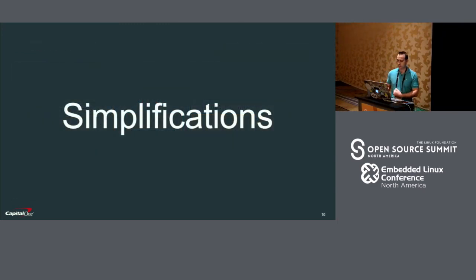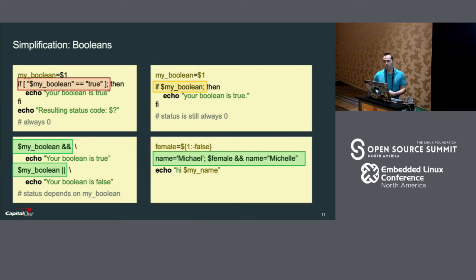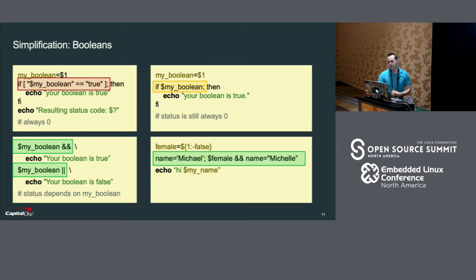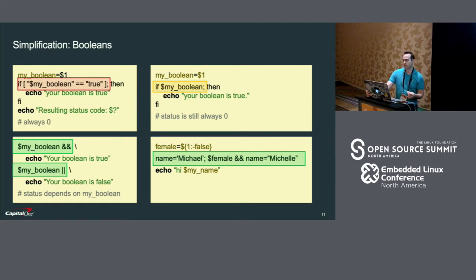I'm going to go over some common simplifications I make in scripts. The first deals with Booleans. A common mistake is people check that a Boolean literally is true — I consider this error prone. You can replace that with the statement shown in the yellow block. This mistake is common because people don't really understand how an if statement works. The if statement in bash means that bash is going to run the command right after the word 'if' and check the status code of that command. If the status code was zero, then it's going to run the block of code after 'then'.